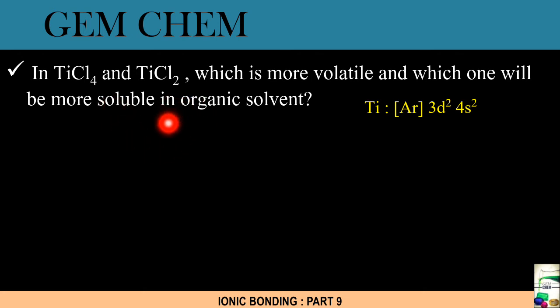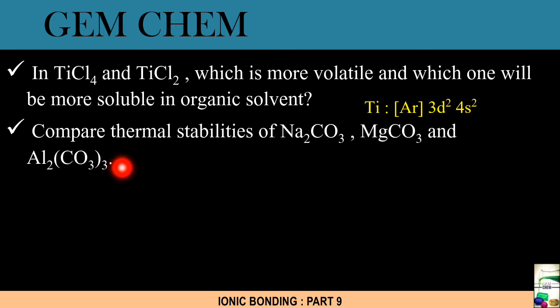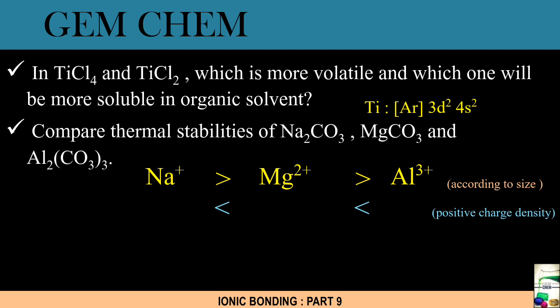Next question is we have to compare the thermal stabilities of Na2CO3, MgCO3, and Al2(CO3)3. Now as we move from sodium⁺, magnesium²⁺ to aluminum³⁺ there is a gradual decrease in the size. And since there is a decrease in the size, there will be increase in the positive charge density which we have already seen. And if there is an increase in positive charge density, the ionic potential will also increase in this order. Then what happens, we can write hence by Fajan's rule there is a gradual increase of the covalent character from sodium⁺ to Mg²⁺ to Al³⁺. That is Na2CO3 is least covalent whereas Al2(CO3)3 is most covalent.